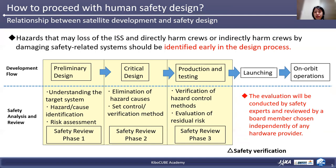During the critical design phase, you should eliminate hazard causes, set control and verification methods, and pass phase two of the safety review. During the production and testing phase, you need to verify the hazard control method and evaluate residual risk. Finally, safety review phase three will be held where the actual flight model will be reviewed. The evaluation will be conducted by safety experts and reviewed by a board member chosen independently of any hardware provider.